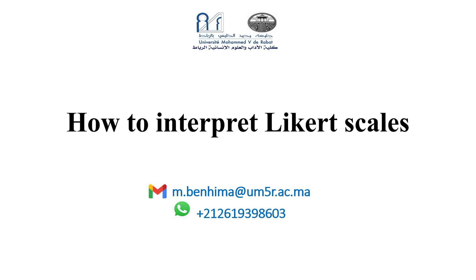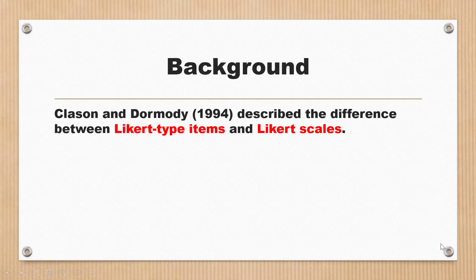I'm going to start by telling you some differences between Likert type items and Likert scales, because many researchers confuse the two types. According to Clason and Dormody 1994, the difference is described in several ways. First, Likert type items are individual questions analyzed separately — for example, questions in the form of a four-point or five-point Likert scale from strongly disagree to strongly agree.